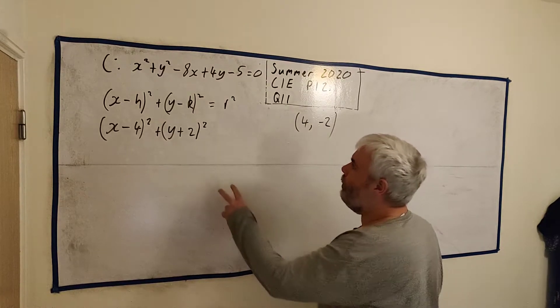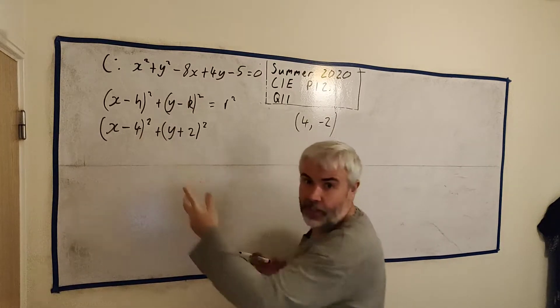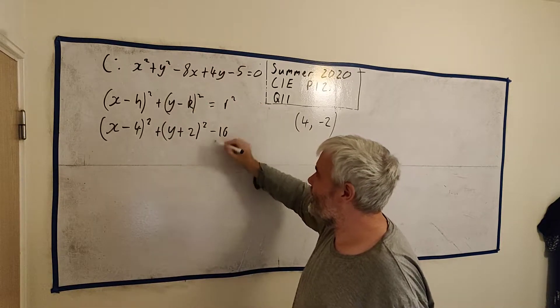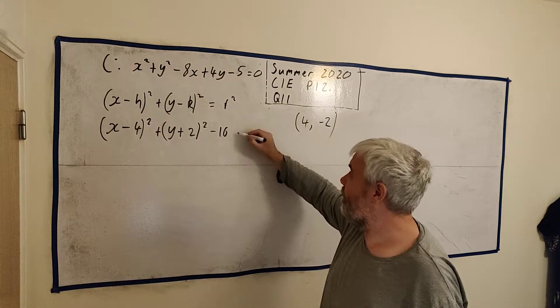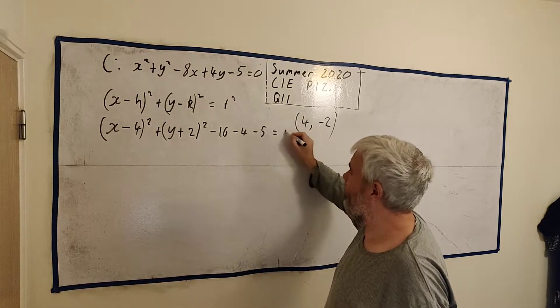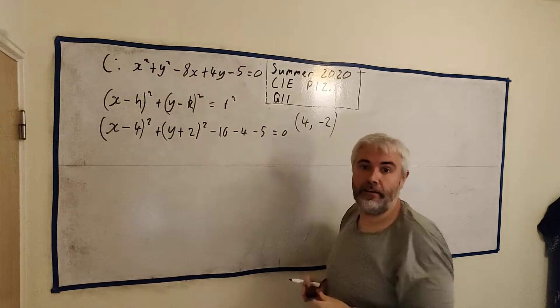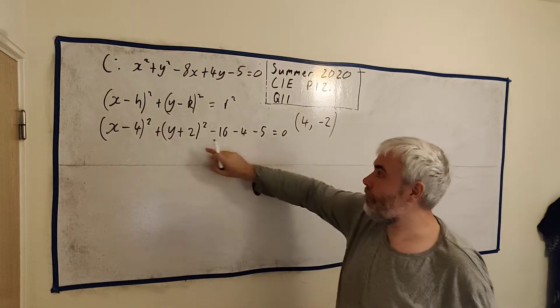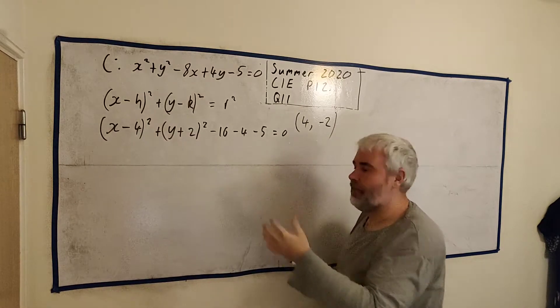Now the problem is this will have an extra 16 plus 16 that I don't want. It wasn't here. I invented it. So I better take away that 16 that I just invented. It'll also have a 4 I just invented. So let's take that away. And it did have a minus 5 already. So this line is the exact same as this line here. I just added in an extra 16 and 4 to make this work, then took them away.